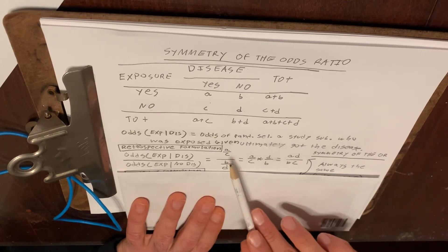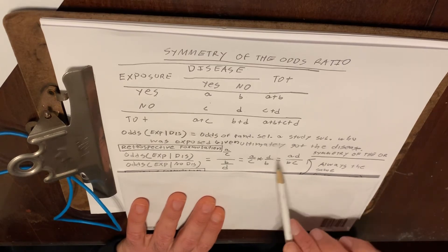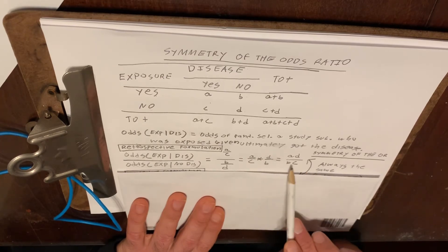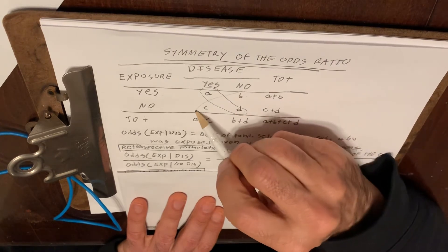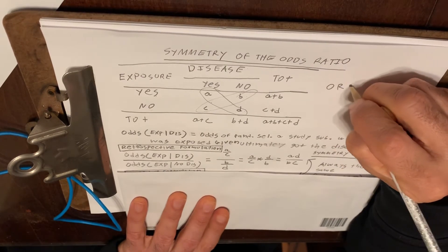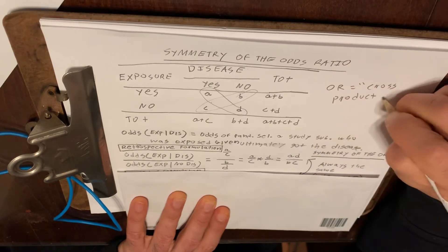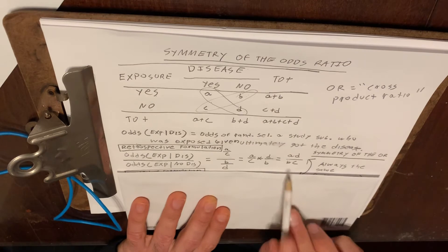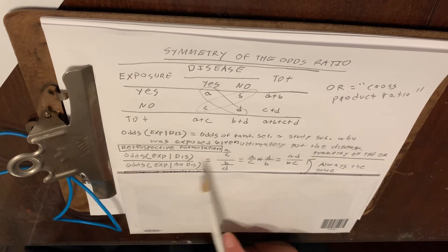When you take A to C and divide it by B to D, the compound denominator gets inverted and multiplied. So this is A over C times D over B, which is AD over BC. That is A times D divided by B times C. The odds ratio is sometimes called the cross product ratio for that very reason — it's like A times D divided by B times C. This is what we get from the retrospective formulation.